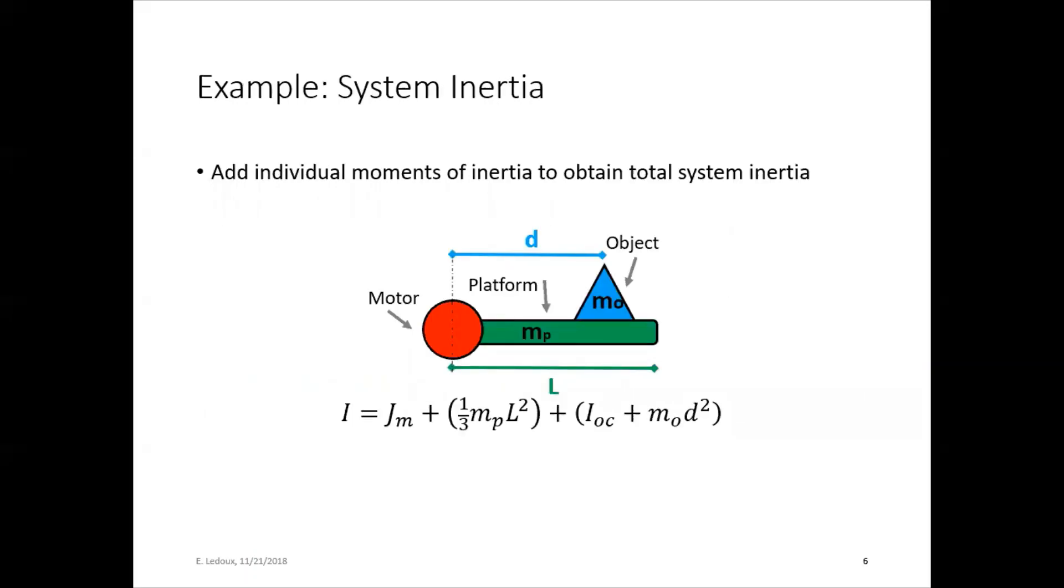Here's an example of that, adding individual moments of inertia to obtain total system inertia. So in this case, we have the motor right here. So we've got JM for the motor. And then we have a platform. The platform is not going to be massless, so we can find mass of the platform. And then that inertia is one-third mL squared for a rod rotating around an axis that's on its end. So this is the platform term.